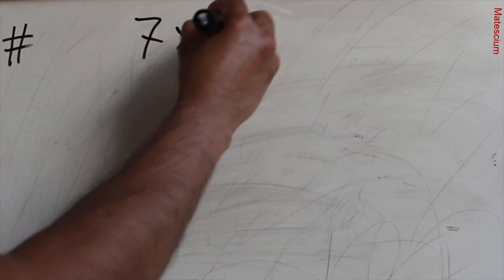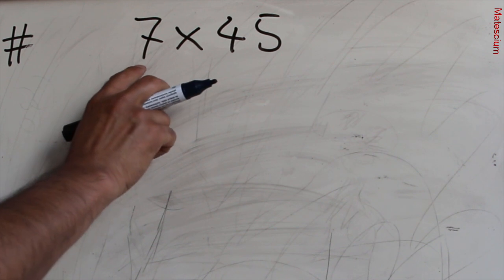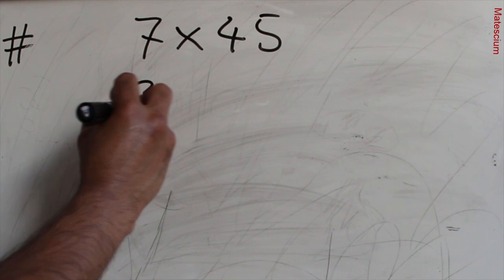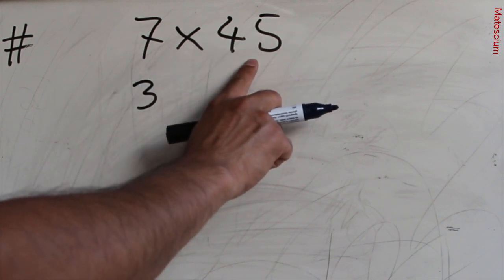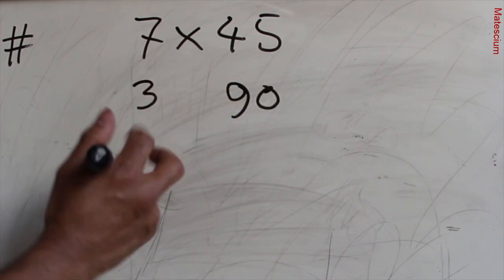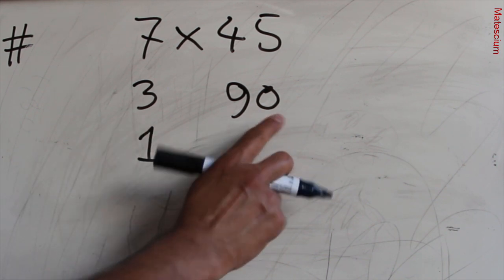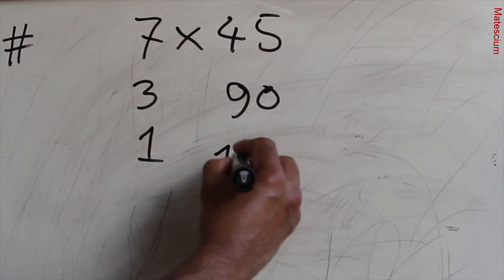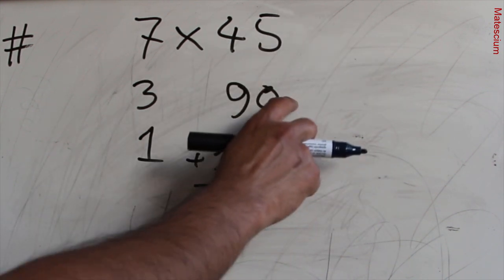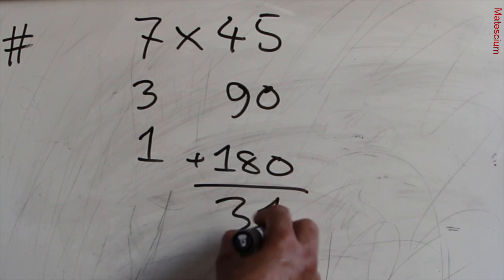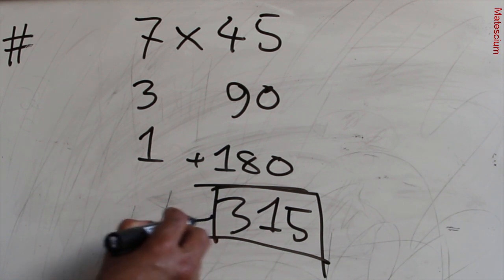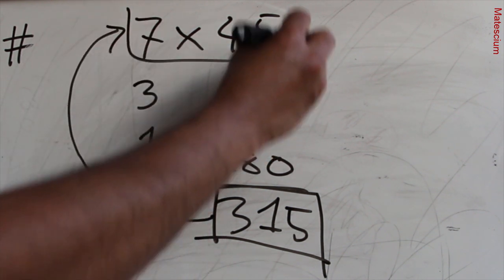Let's do another example: 7 times 45. As I said, consider half of 7 — that means 3.5, so write 3. Make double of 45 — double means 90. Half of 3 means 1.5 — write only 1 here. Double of 90 means 180. Add these three numbers together: 180 plus 90 plus 45, which equals 315. Yes, 315 is the answer of 7 times 45.